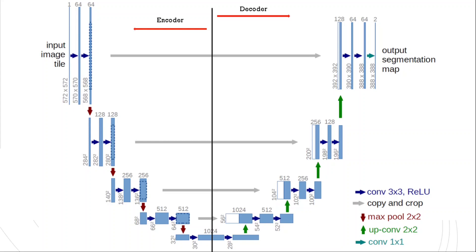The main idea behind UNet is that the encoder compresses image data into a bottleneck layer representing high-level information. In the decoder, more and more detail is added to recreate the output segmentation map. As we progress through the encoder, more spatial information is lost through convolutions. Since low-level features are essential for determining exact object boundaries, skip connections pass this low-level information and combine it with high-level information in the decoder part.